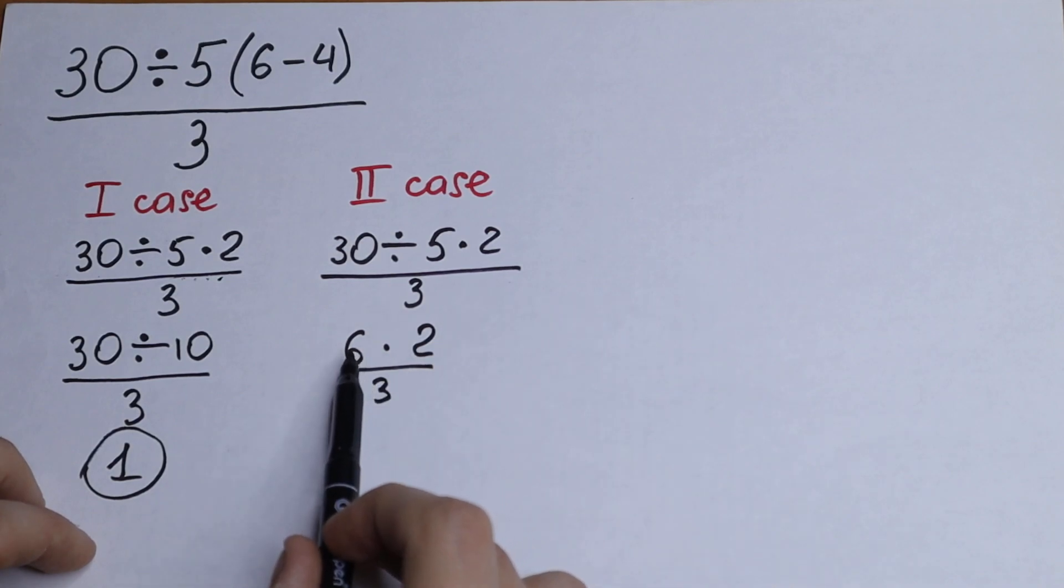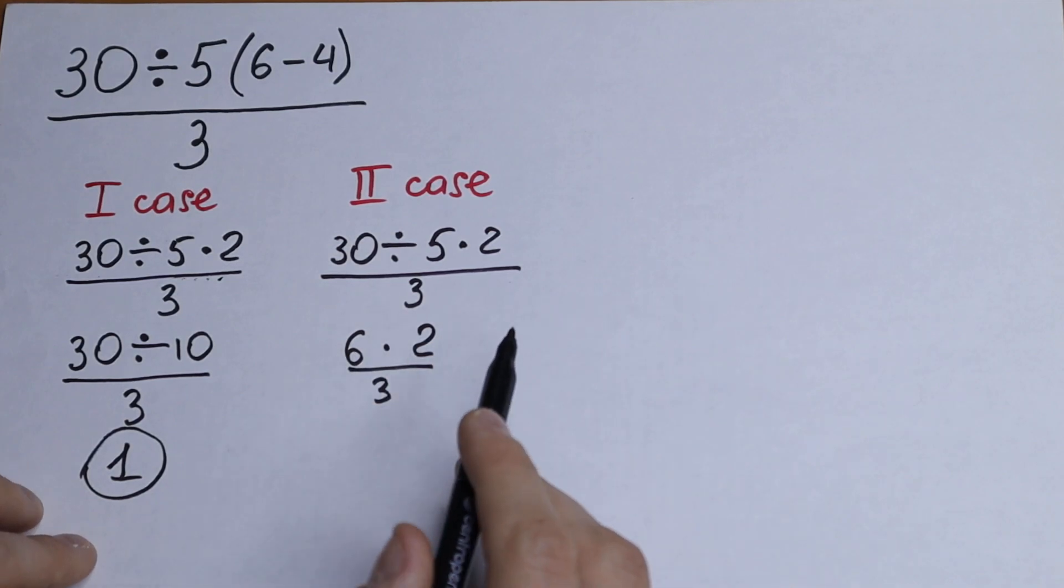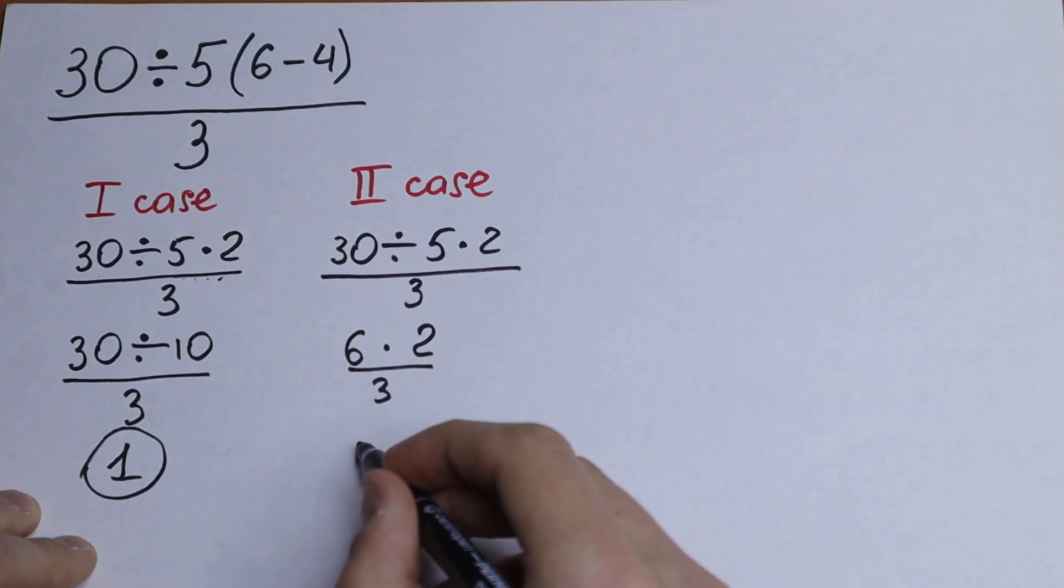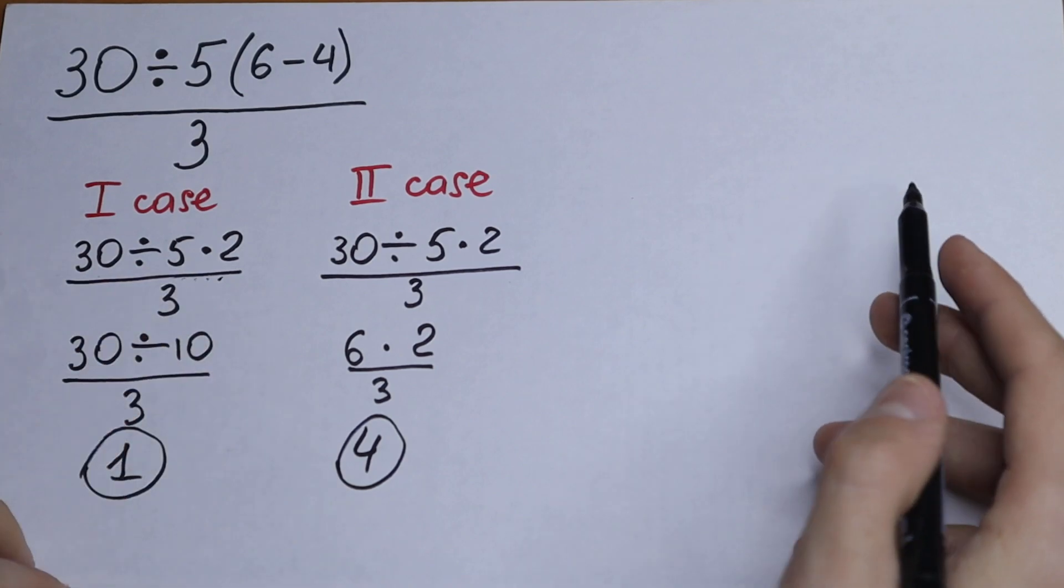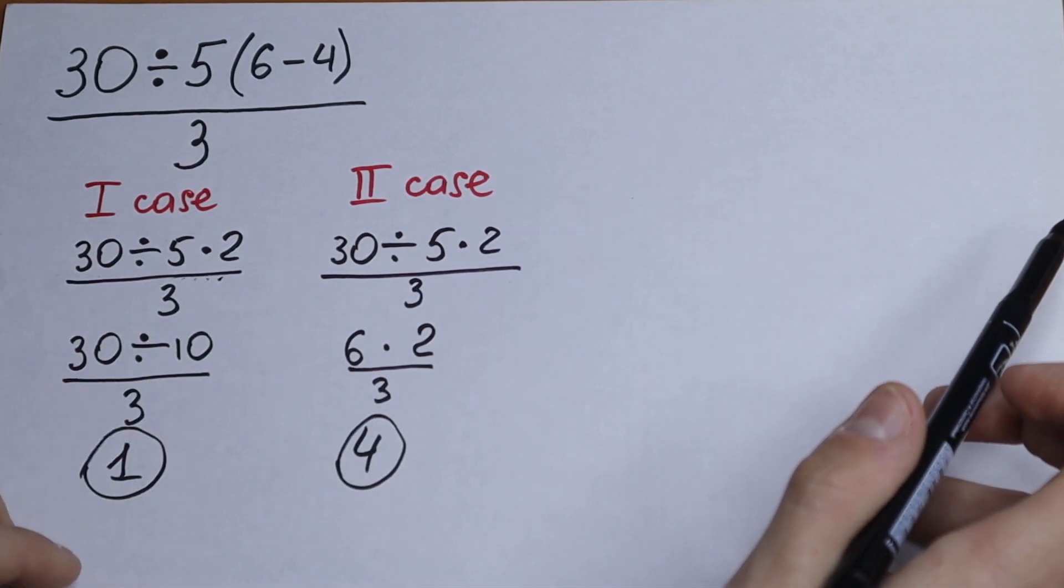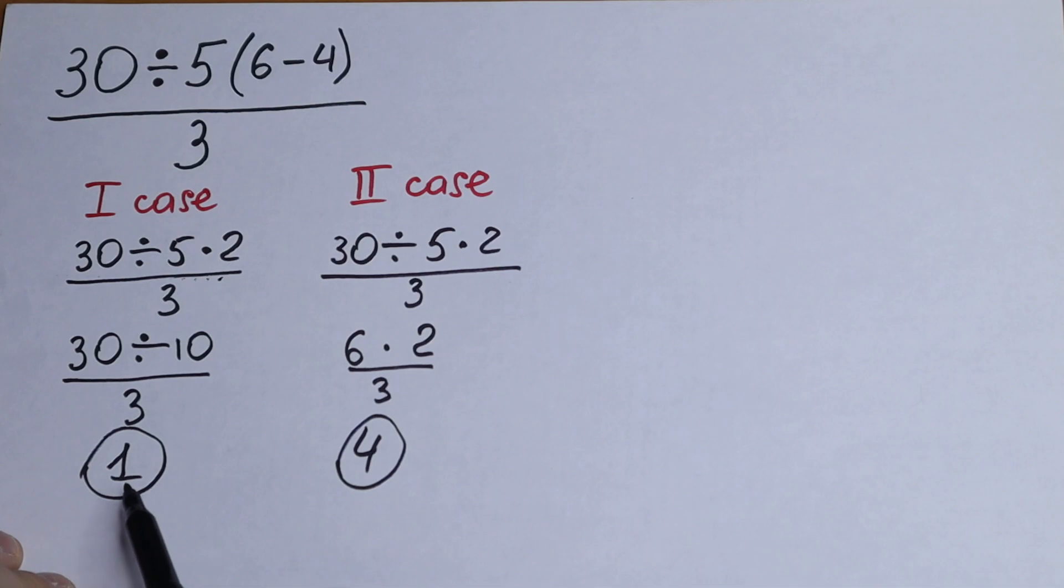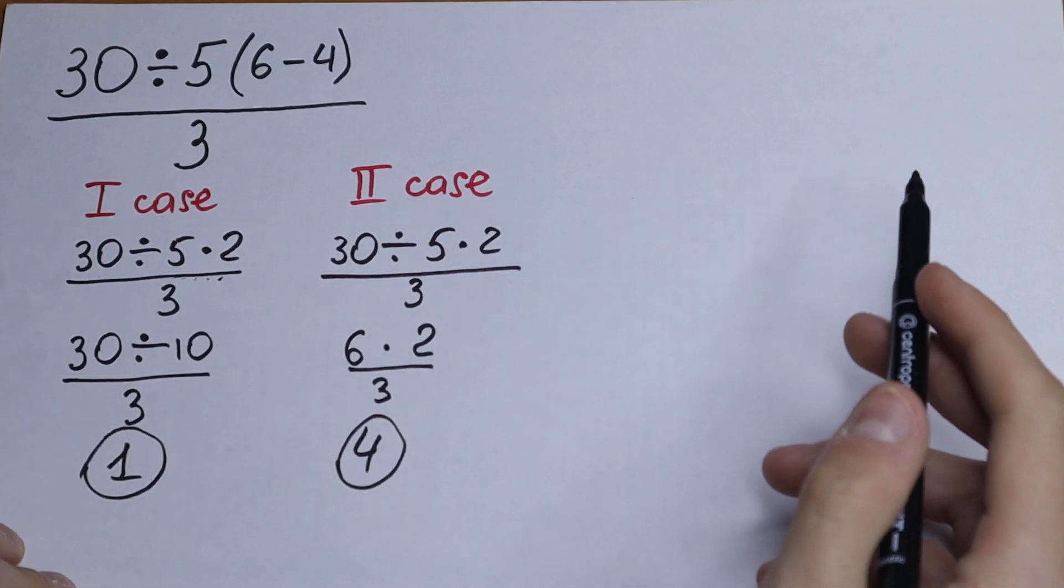As a result, we will have 6 times 2, 12. 12 over 3 will be 4. This is our second case. But we use the same rule on the left and the right, why we have different answer. We have one in first case and the four in the second case.